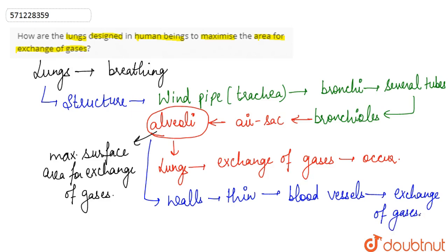In summary, the lungs are designed so that the windpipe branches into the bronchi, which branch into bronchioles, which further divide into small pouch-like air sacs called alveoli. The alveoli provide maximum surface area and are the site of gas exchange. Their very thin walls and surrounding blood vessels facilitate this exchange.